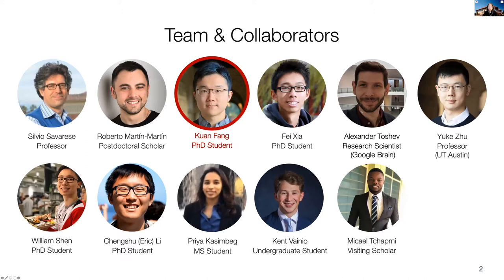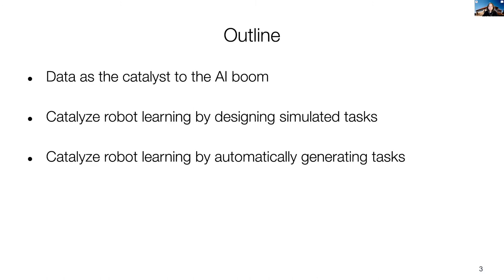Let me begin by acknowledging some of the students and collaborators who have contributed to the work we're going to present. I'll start by talking about our work in the first half of this talk, and then my PhD student Huang Fan, jointly advised by Silvio Savarese, will take over for the second half. Here's the outline: we'll talk about the importance of data that has catalyzed the AI boom, then focus on robotic learning and how we can rely on simulation tasks to create more data, and finally talk about a new way of generating tasks for robotic learning.